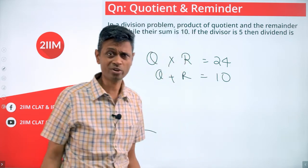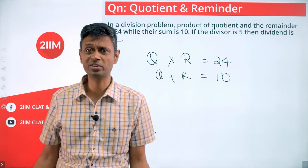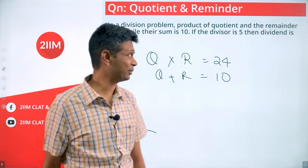Very simple question. Quotient and remainder are nice integers; they have to be positive. So, 6 into 4 is 24, 6 plus 4 is 10. We do not need to solve a quadratic equation, we know this.